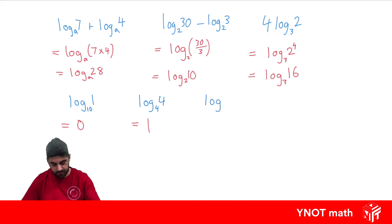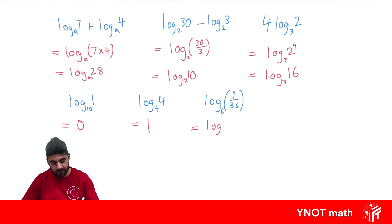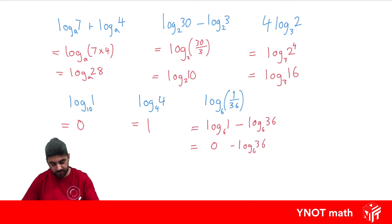What about log of 1 over 36, base 6? Here we have the log of a quotient, which is going to be the difference of logs. So we're going to get log 1 base 6 minus log 36 base 6. The log of 1 is 0, so we just get minus log 36 base 6.